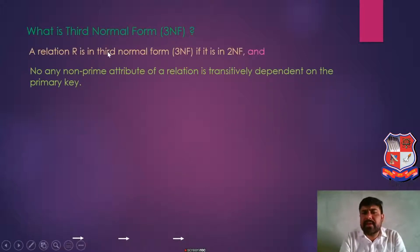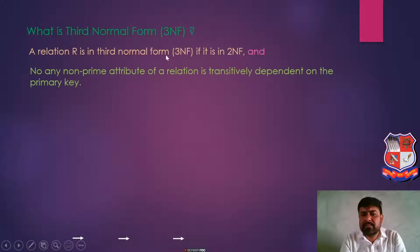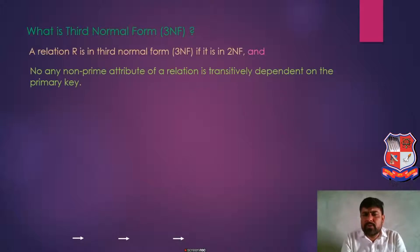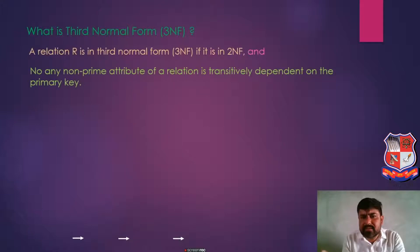तो third normal form के criteria कौन से है. Relation R is in third normal form if it is in second normal form — पहला criteria है कि वो second normal form में होना चाहिए. Second normal form के दो criteria थे: एक तो वो first normal form में होना चाहिए, और दूसरा, every non-prime attribute fully functionally dependent on primary key. तो relation में कोई composite attribute नहीं होना चाहिए, multi-valued attribute नहीं होना चाहिए, और उसके जितने भी non-prime attributes है वो सारे primary key पे fully functionally dependent होने चाहिए.